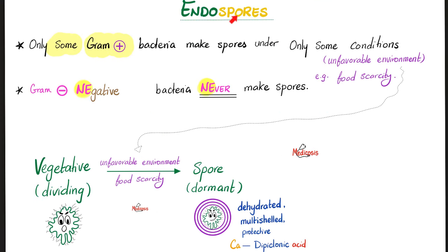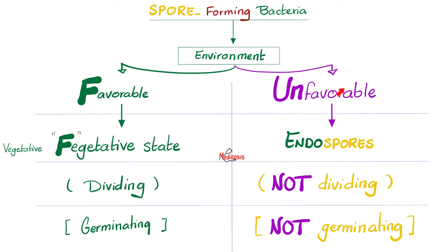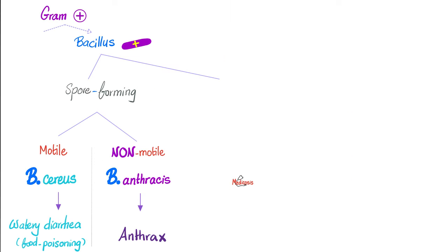Can Bacillus anthracis make spores? Of course. The spores help the bacteria survive in unfavorable conditions. The bacteria is dormant in the spore form — not dividing, not germinating. But later, it can go back and divide like crazy. That's why spores are dangerous. Bacillus anthracis, which causes anthrax, is a gram-positive bacillus that is spore-forming but non-motile.